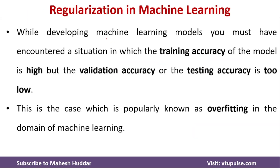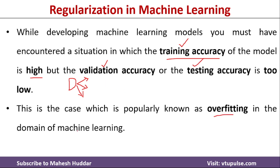While developing a machine learning model, many times we encounter a situation in which the training accuracy of the model is very high, but the validation or the testing accuracy is too low. Usually we divide the dataset into three groups — training, validation, and testing set. When the model works perfectly fine on the training data but poorly on validation or testing data, such a situation is known as overfitting.